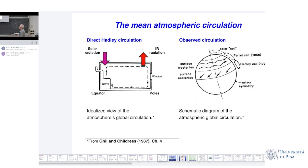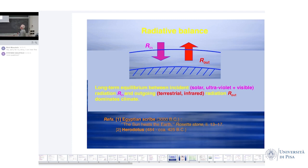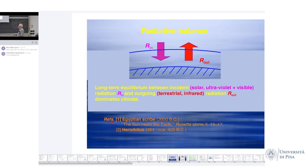The general principle is that there's some incoming radiation and some outgoing radiation. The climate of Earth corresponds to long-term equilibrium between incident solar radiation — ultraviolet, visible — and the outgoing radiation, which we call terrestrial infrared. That dominates climate. The references listed include Egyptian writings from 8000 BC, the Rosetta Stone, and Herodotus, circa 484 BC.